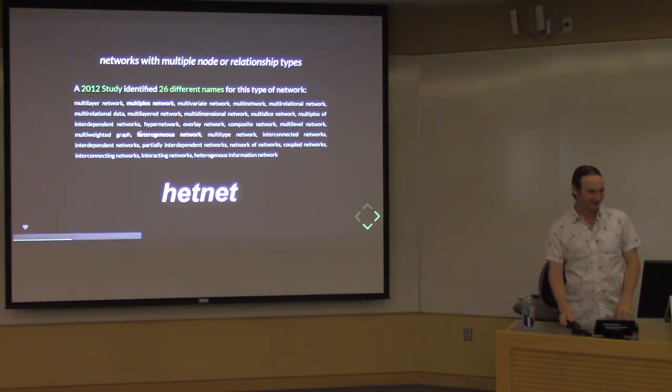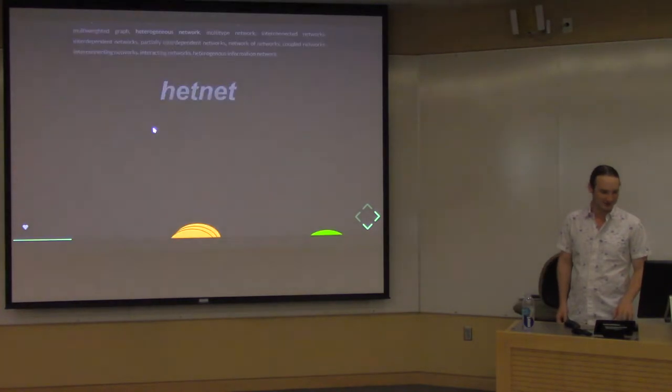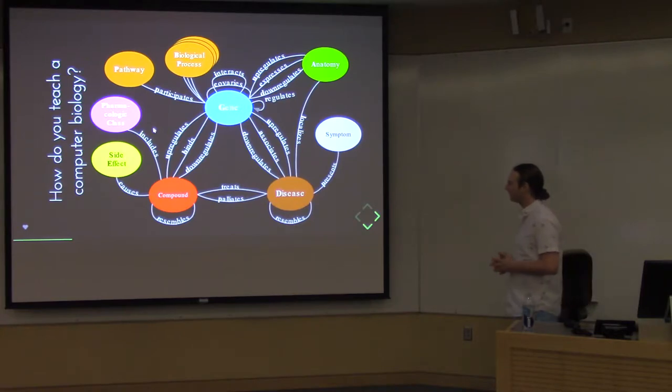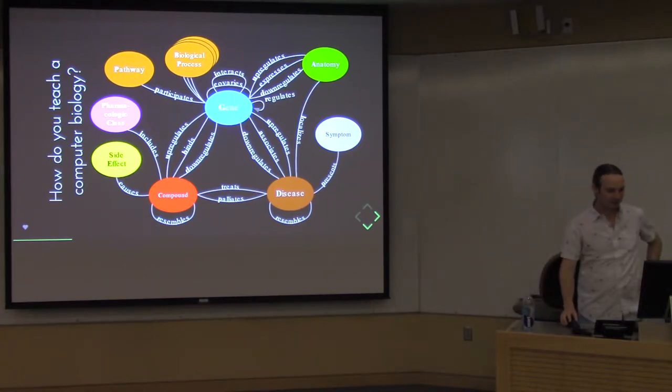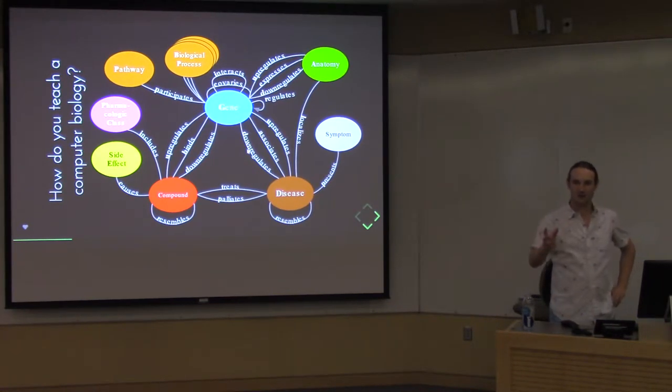I thought the existing networks were too simple. We needed networks with multiple node and relationship types. At that time, and still to this day, these networks are being researched, but they're being researched in different disciplines and there's not a great consistent terminology. A 2012 study identified 26 different names these networks sometimes go by. I wanted to pick a name that could give rise to a field of study. When you have 26 different terms, what do you do? You invent a 27th. I call these networks hetnets. It's not totally invented because there's this existing term, heterogeneous network or heterogeneous information network, and I just wanted something a little bit more catchy.